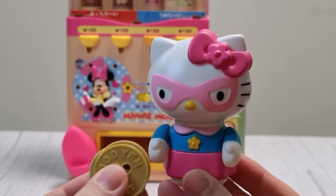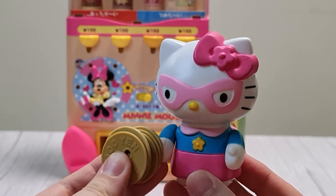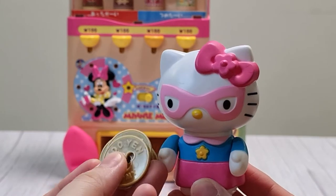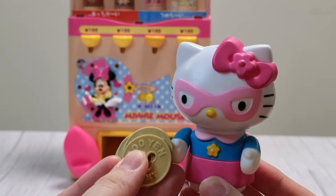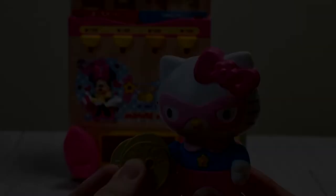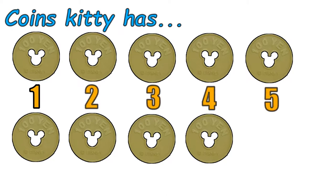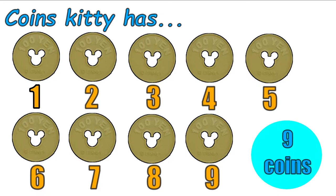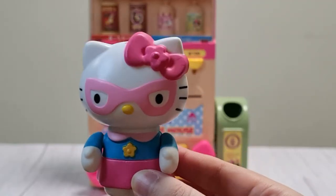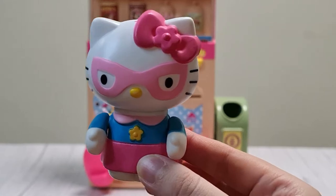Now, Superkitty, how many coins do you have? I have... 1, 2, 3, 4, 5, 6, 7, 8, 9! 9 coins! So, I can buy 9 drinks!